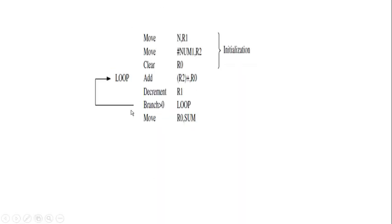This is the program example. We have discussed the same program example many times in our previous videos. But what is the difference here? Let's write this one instruction: inside the parenthesis, R2 plus, comma R2. This particular notation indicates auto-increment mode of addressing.